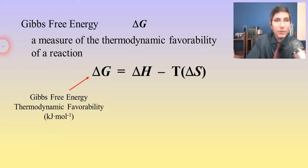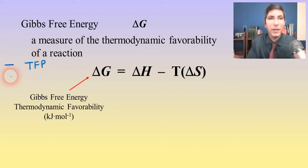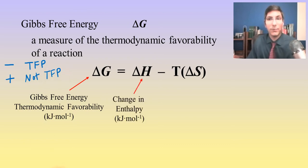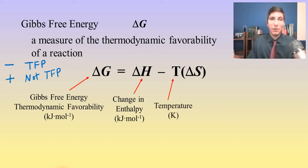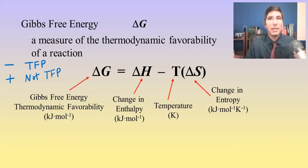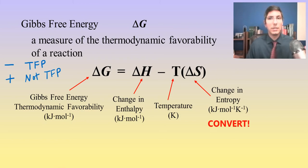If the value for delta G is negative, it is a thermodynamically favored process. On the other hand, if it's a positive value, it's not a thermodynamically favored process at that temperature. Delta H is the change in enthalpy in kilojoules per mole. T is the temperature in kelvins, and delta S is the change in entropy in kilojoules per mole per kelvin. Note that entropy is normally given in joules per mole per kelvin, so you'll need to convert to kilojoules to keep your units consistent — otherwise you'll get a math mistake.